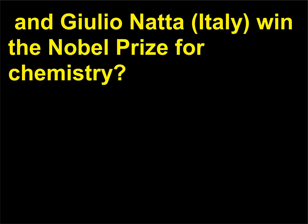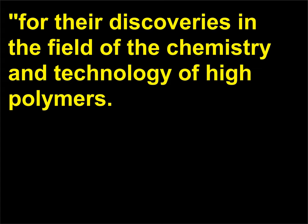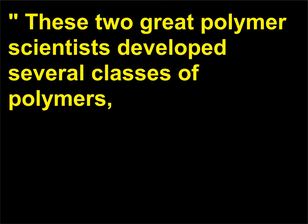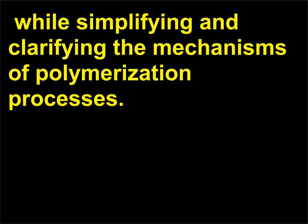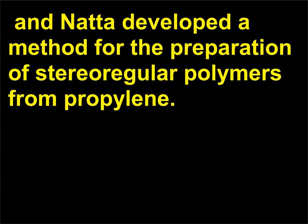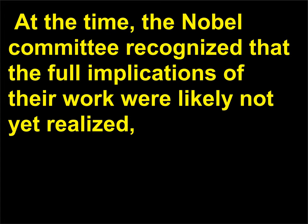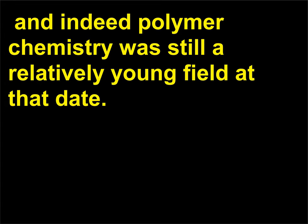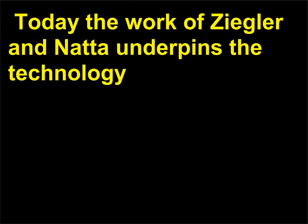For their discoveries in the field of the chemistry and technology of high polymers. These two great polymer scientists developed several classes of polymers while simplifying and clarifying the mechanisms of polymerization processes. Ziegler discovered titanium complexes that can catalyze olefin polymerization reactions, and Natta developed a method for the preparation of stereoregular polymers from propylene. The Nobel Committee recognized that the full implications of their work were likely not yet realized, and indeed polymer chemistry was still a relatively young field at that date. Today the work of Ziegler and Natta underpins the technology used to generate many of the plastics we encounter.